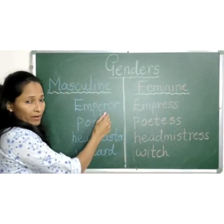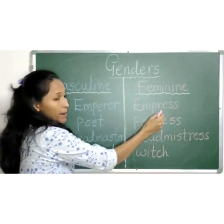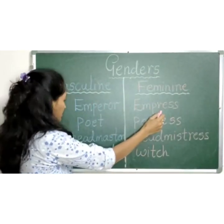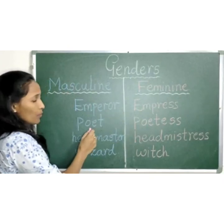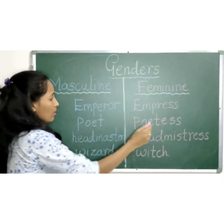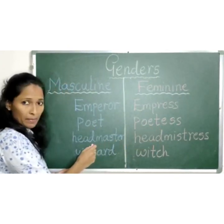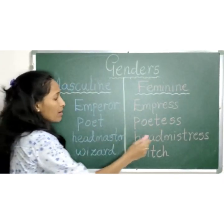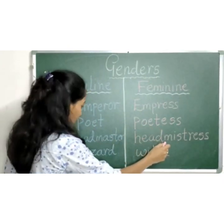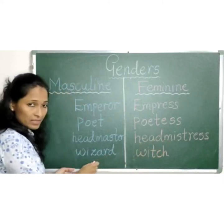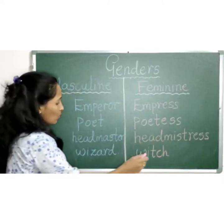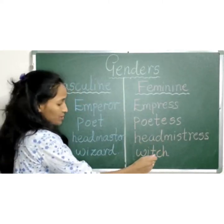Emperor — empress. Poet — poetess. Headmaster — headmistress. Wizard — witch.